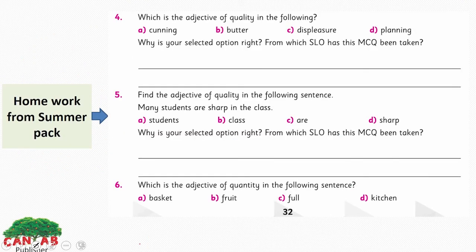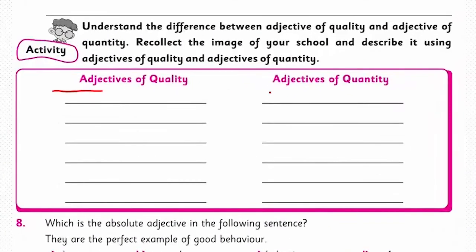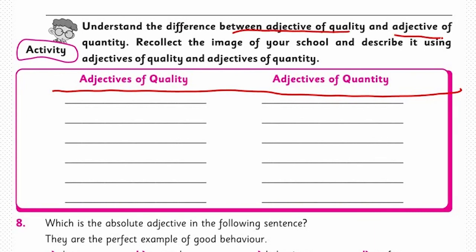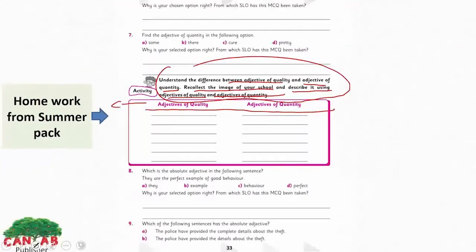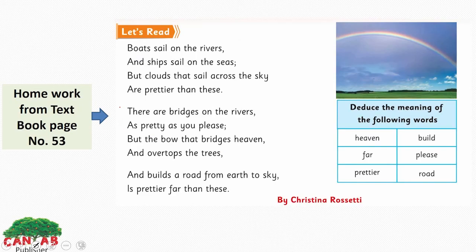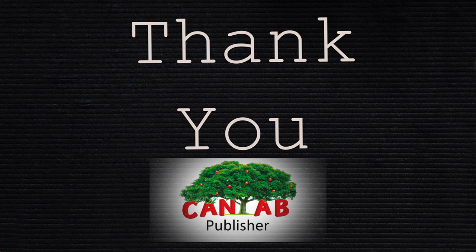This is your homework from Summer Pack page number 32, and also from Summer Pack page number 33. We also have an activity: you have to understand the difference between adjective of quality and adjective of quantity. Recollect the image of your school and describe it using adjectives of quality and adjectives of quantity. This is also your homework from Summer Pack page number 34, and from the textbook page number 53. In our next lesson we will read about the Rambo, so give it a read and identify all three types of adjectives — quality, quantity, and absolute. I hope you have enjoyed my lesson. Thank you.